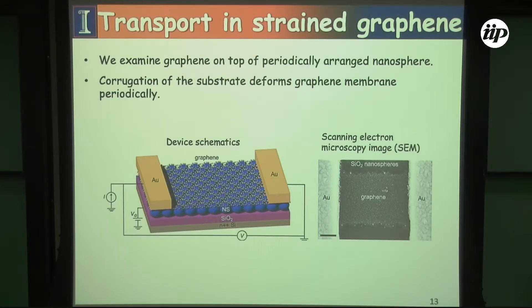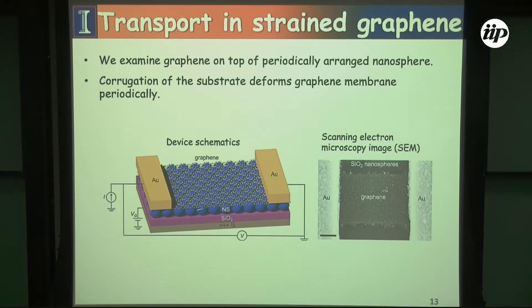This is the structure they created to measure transport of graphene draped over nanospheres. It's always nice — though very rare — to have a picture of something real in my talk. I'm unapologetically a theorist, but it is kind of a nice change of pace. The device schematic has two-terminal contacts, with silicon dioxide nanospheres and graphene draped on top. If the graphene is placed beneath the silicon dioxide nanospheres instead, we don't see these effects.